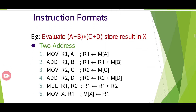Using two-address instructions to evaluate (A + B) × (C + D): MOVE R1, A; ADD R1, B — so R1 = A + B. Then MOVE R2, C; ADD R2, D — so R2 = C + D. Then MUL R1, R2 — multiply R1 and R2, result stored in R1. Finally, MOVE X, R1 to store the result.